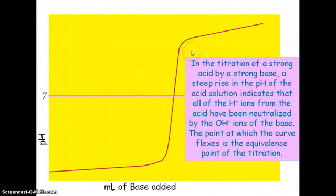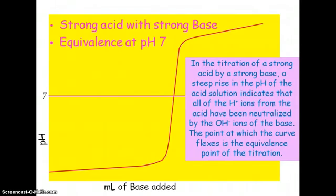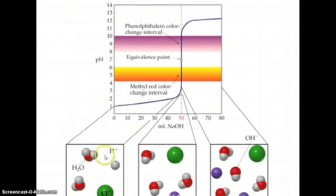The steep rise in the pH is where the H plus ions from the acid have been completely neutralized by the OH minus ions of the base. So this is where the curve flexes and that's where we say the equivalence point is. And remember it's at a pH of 7. Here's a molecular view. So we see that initially we have some H pluses and then at equivalence point we have H pluses and OH's making water and then here's our salt, our Na and our Cl dissolved. And then when you get beyond the equivalence point you have an excess of base so you have more OH's than H2O's.